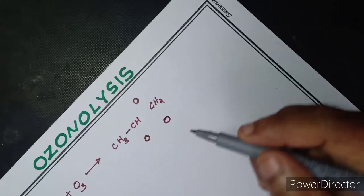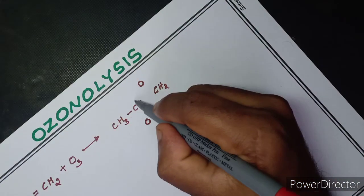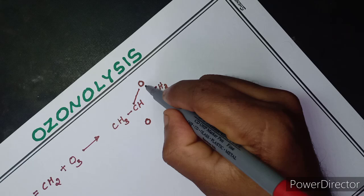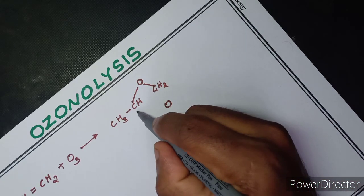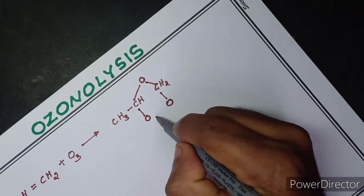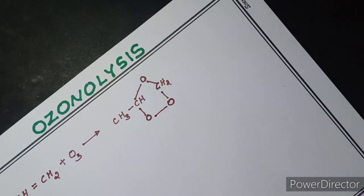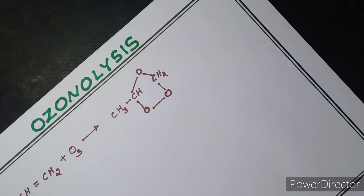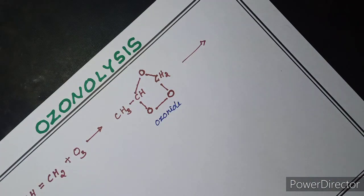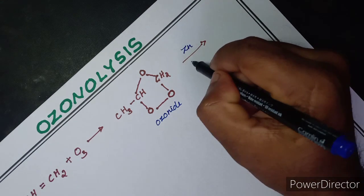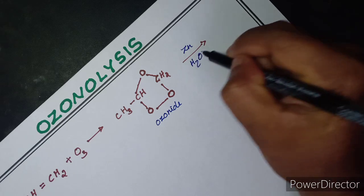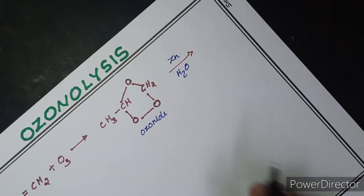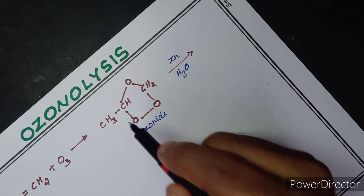We have to use each carbon. We use each carbon in this structure. This is the name of ozonide. We have ozonide. We will treat this ozonide.